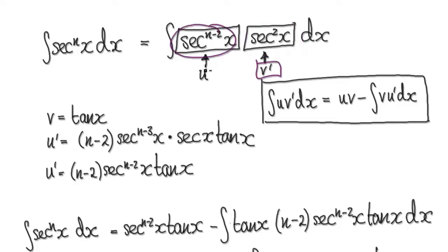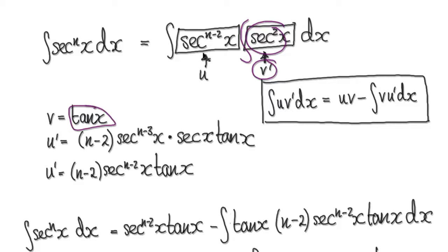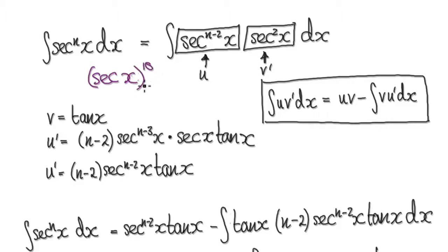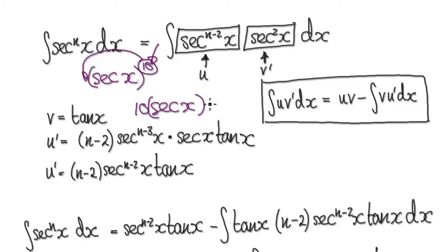We can differentiate u. If v prime equals this, then when you integrate it would be tan of x. Now if u equals secant to the power of n minus 2, then u prime — imagine this as secant to the power of 10, for example. When you differentiate it, the power comes down: that would be 10 times secant x, and then the power gets reduced by 1, giving 9, times the derivative of the inner function, which is secant x tan x.